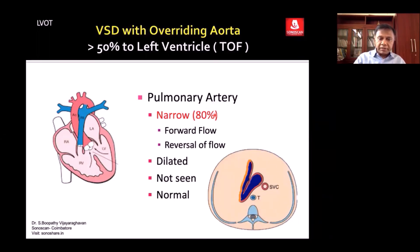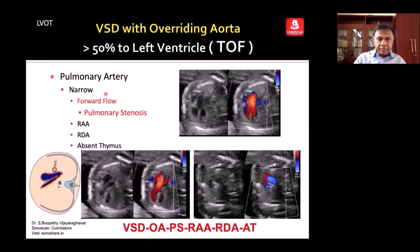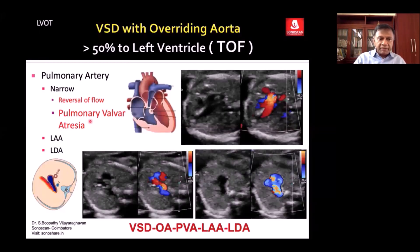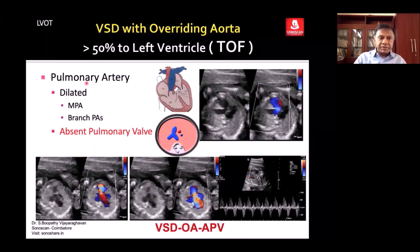This occurs in 80% of VSD-overriding cases. The features seen are VSD with overriding aorta and pulmonary stenosis with left aortic arch and left ductal arch, narrowing to a narrow pulmonary artery. When the aortic arch is on the right side: right aortic arch and right ductal arch with narrow pulmonary artery and forward flow — pulmonary stenosis. Right aortic arch but left ductal arch: when there is pulmonary valve atresia, the aortic arch is on the right side but the pulmonary artery is reversed.